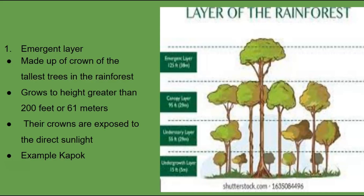The rainforest is made up of different layers, and we're going to go through all five layers quickly. The first layer at the very top is the emergent layer. The emergent layer is made up of the crowns of the tallest trees in the forest, and these trees grow to a height of 200 feet or 61 meters or taller. Their crowns are exposed to direct sunlight, so they receive more sunlight than any other plant in the tropical rainforest. An example is the kapok tree.